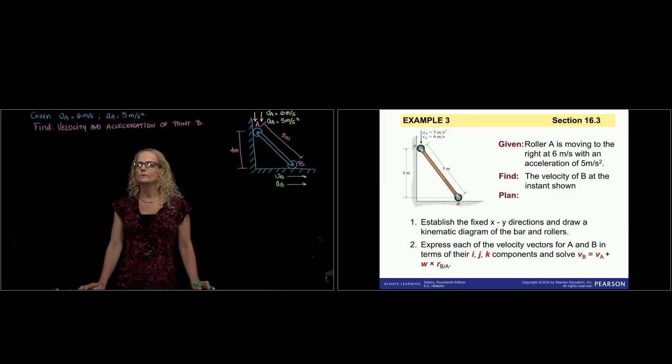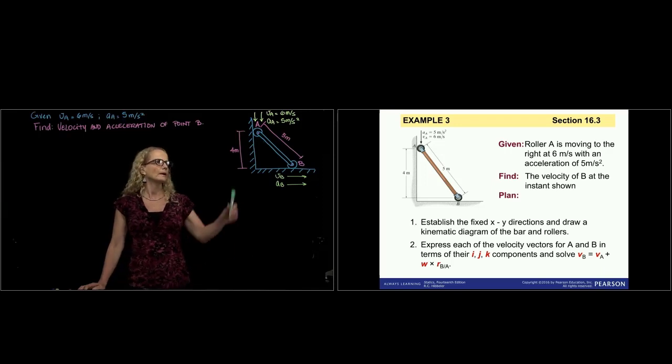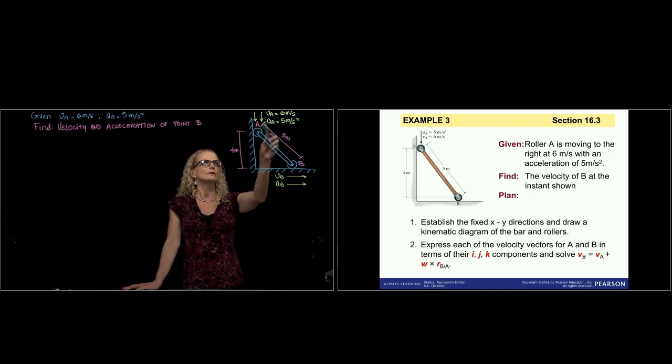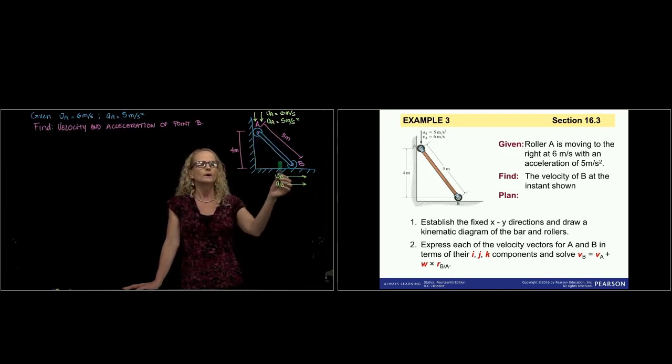Hi, this is example number 3 from section 16.3. Here we have a bar connected to two rollers. We are going to study the kinematics of this problem. We have been given the velocity and the acceleration of point A, and they want us to find the velocity and acceleration of point B.